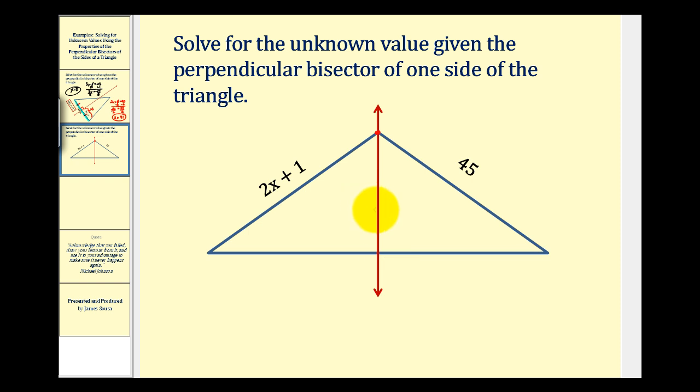And I don't know if you remember, but when you have a perpendicular bisector of a segment, any point on the perpendicular bisector is always the same distance to the endpoints of the segment. So that means this side of the triangle must be congruent to this side of the triangle or that they're equal in length.